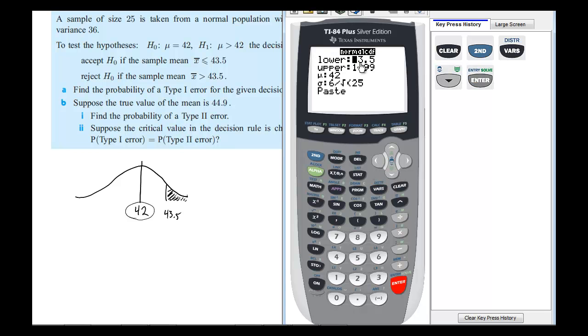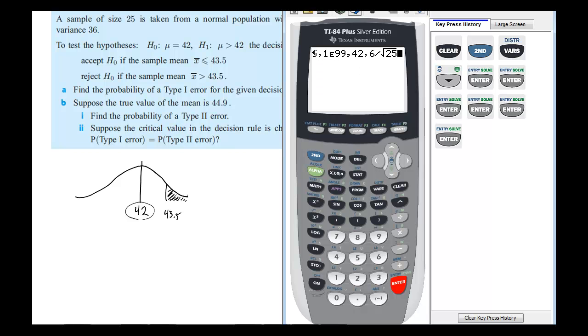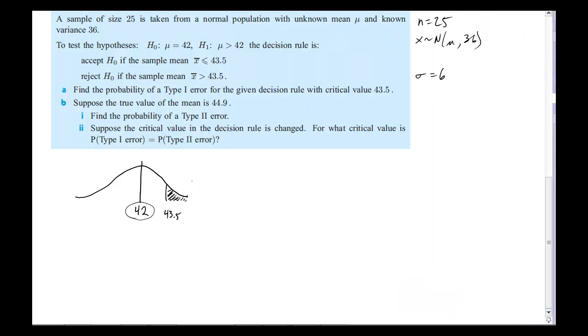So our lower bound is 43.5, our upper bound will be infinity, and the average is 42. Our standard deviation will be 6, because that's the square root of 36 (the variance), divided by the square root of 25 to account for sample size. When I put all those in, we get our answer of 0.1056, or 0.106, and that is α, the probability of a Type 1 error.